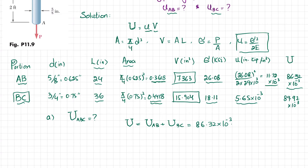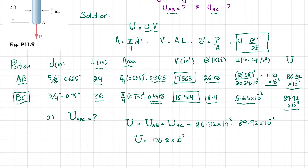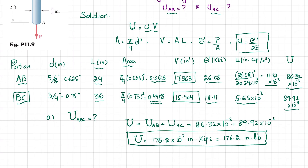For part A, the total strain energy for rod ABC equals U_AB plus U_BC. That is 86.32 into 10 to the power minus 3 plus 89.92 into 10 to the power minus 3, giving a total strain energy of 176.2 into 10 to the power minus 3 inch·kips. This is the answer to part A.